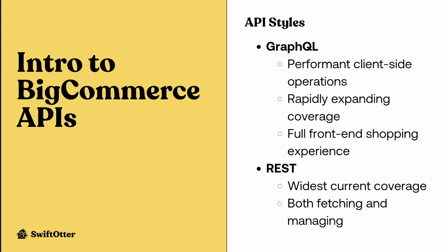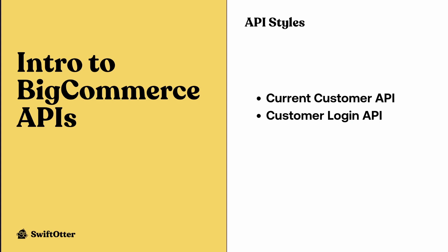The GraphQL APIs have been getting the most rapid attention for continuing to expand their coverage. With the release of the beta versions of GraphQL for cart and checkout operations, you pretty much have availability to do all of the front-end shopping experience operations — all the way from displaying catalog data through checkout — with GraphQL APIs. On the other hand, the REST APIs have the widest current coverage for not only fetching data from your BigCommerce store but also managing virtually any aspect of that data. A couple of APIs that don't necessarily fall into either GraphQL or REST — though technically REST endpoints — are the Current Customer API and the Customer Login API, which are GET endpoints involving specific query string parameters or tokens and customer session data.